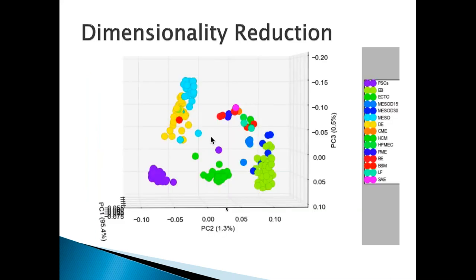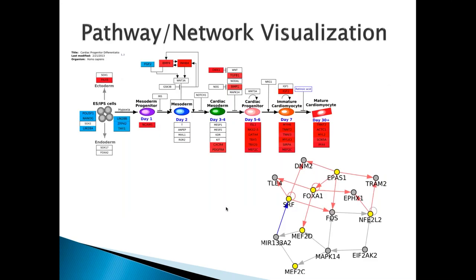This is an example of a 3D visualization plot — these are actually bulk RNA-seq samples collected from pluripotent stem cells and other differentiated products. The colored balls represent different samples and their relationship to each other within the variance associated with the top three principal components.